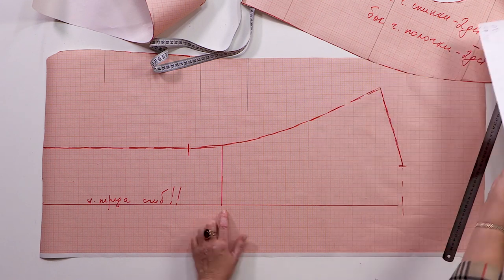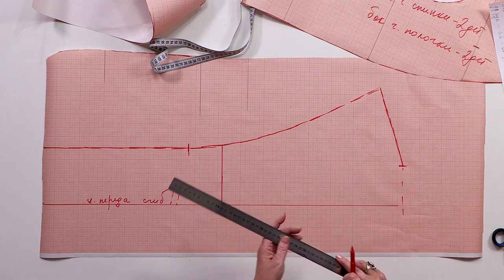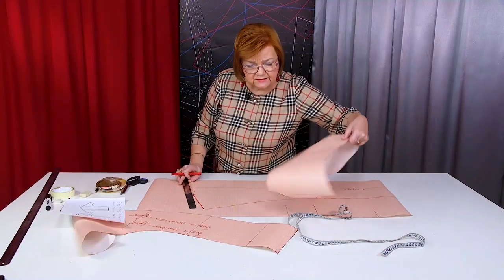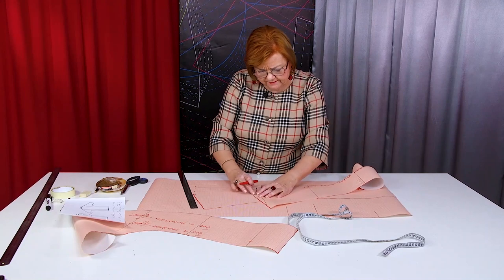The upper detail will be two pieces. First, I need to draw a collar. I need to measure the back neckline. 10 cm.